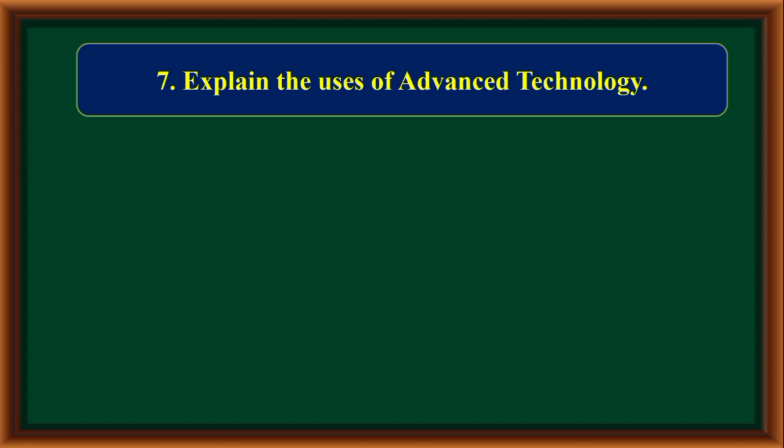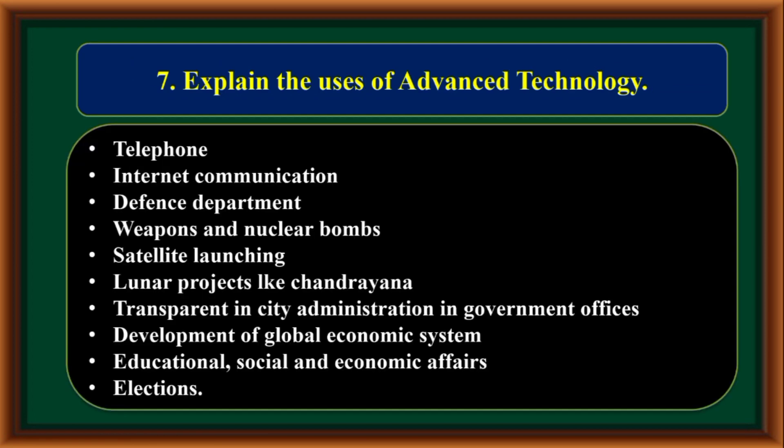Explain the uses of advanced technology. Advanced technology is used in telephone, internet communication, defense departments, weapons and nuclear bombs, satellite launching, lunar projects like Chandrayaan, city administration, government offices, development of global economic systems, educational, social and economic affairs, and elections.